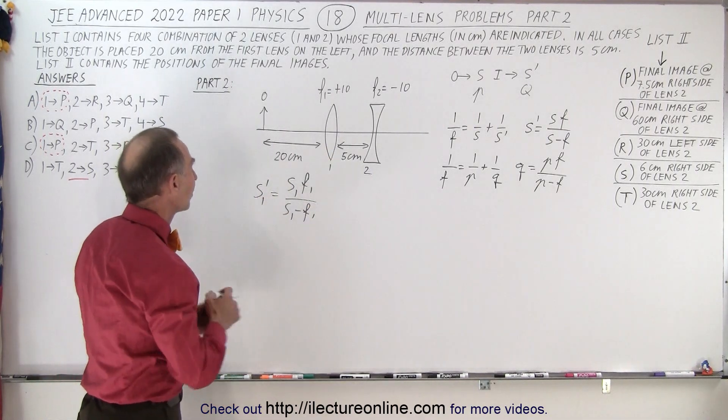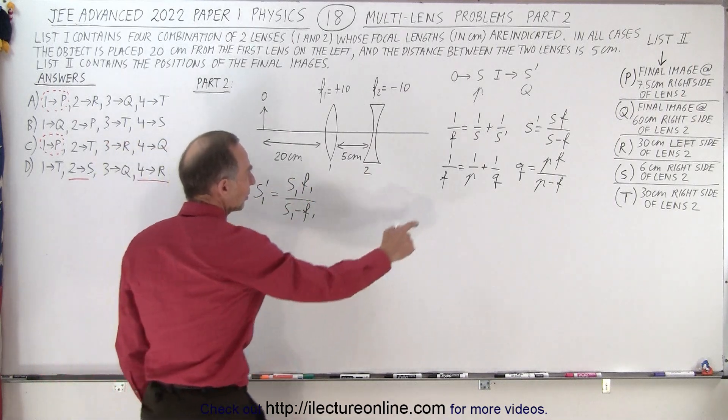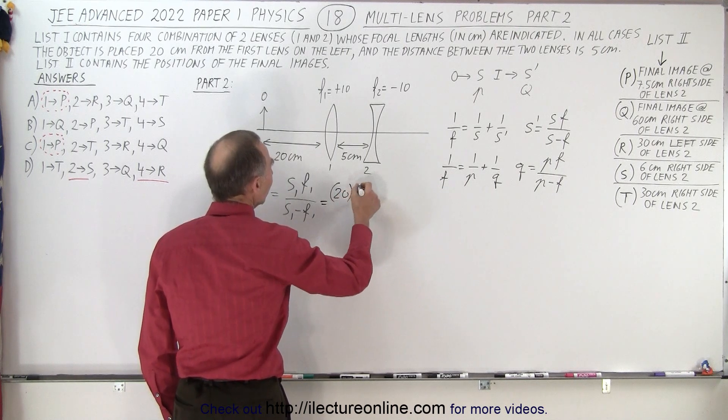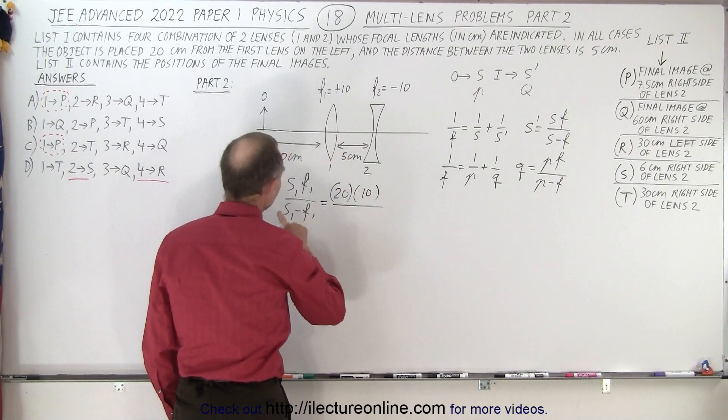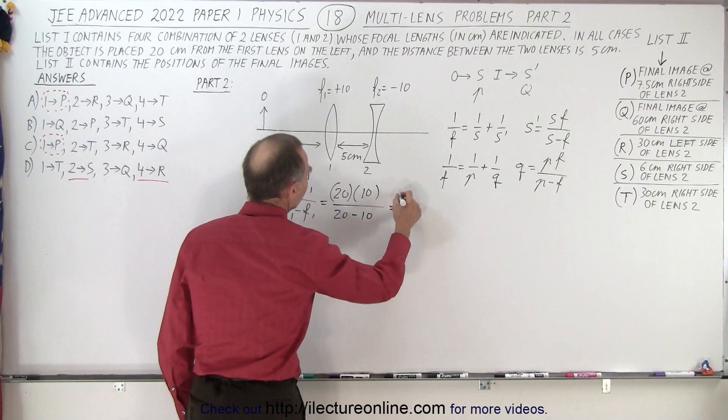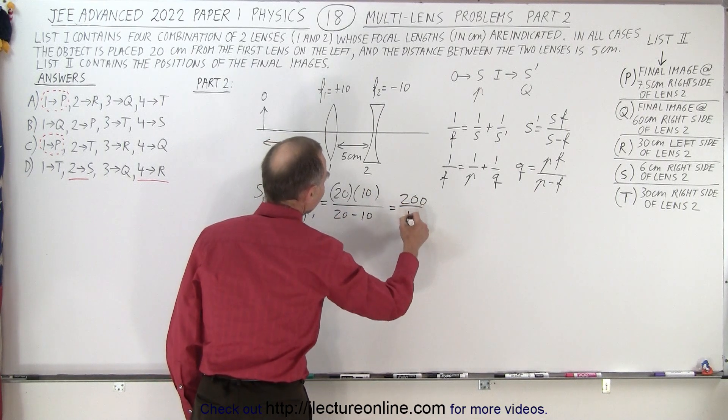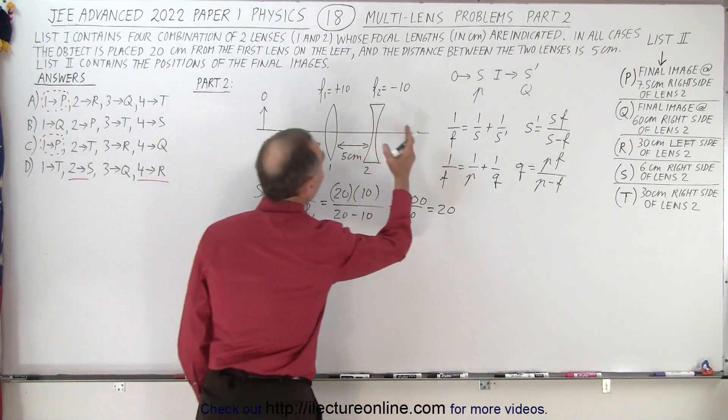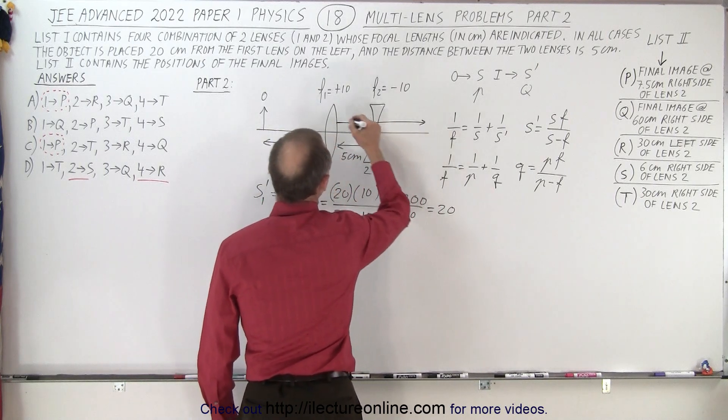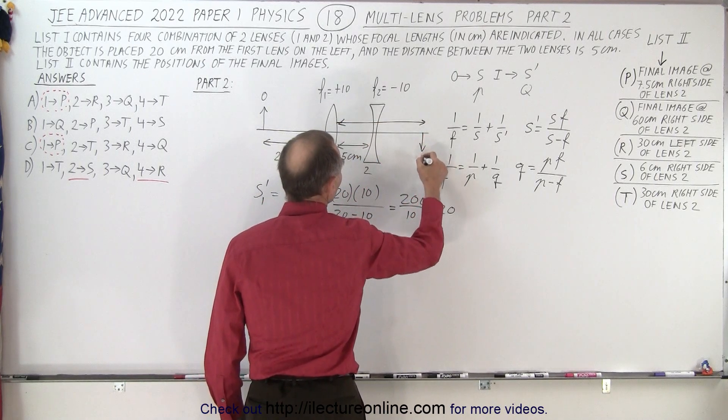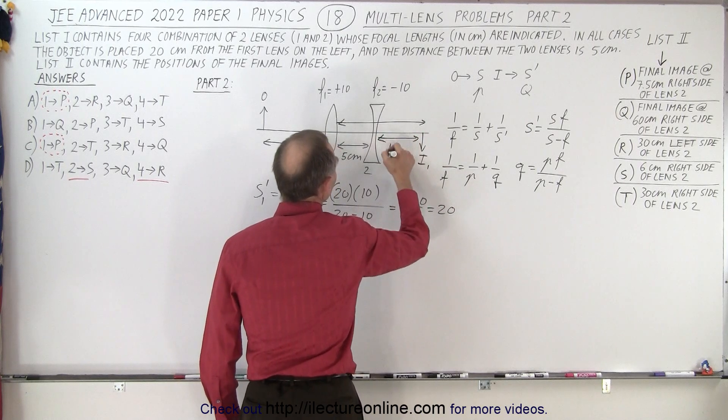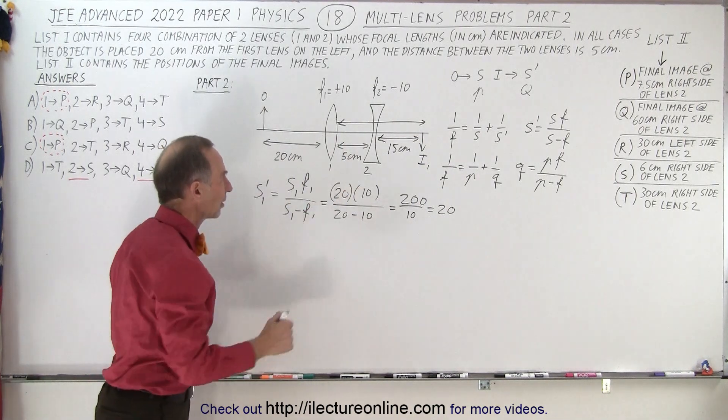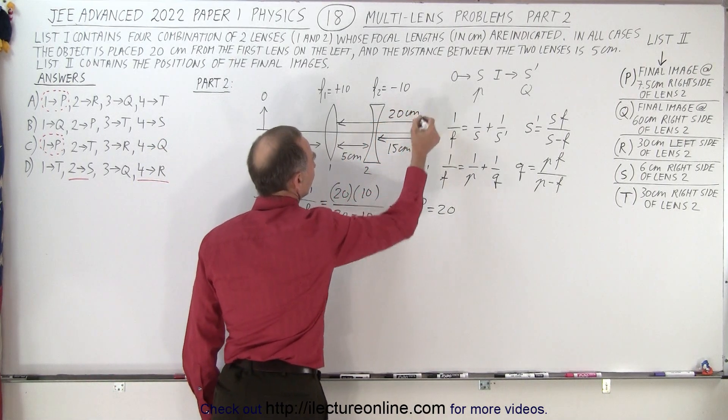So continue with this because this is easier to calculate than of course using this format of the equation. So this is equal to 20 for the object distance times the focal length which is 10 divided by 20 minus 10. So this gives us 200 divided by 10 which is 20. So the first image is placed 20 centimeters to the right of lens 1. So that's this distance right here. So here we form our first image. This is image 1 which means that it's 15 centimeters past the second lens because this distance here is 5 centimeters and this distance here is 20 centimeters.